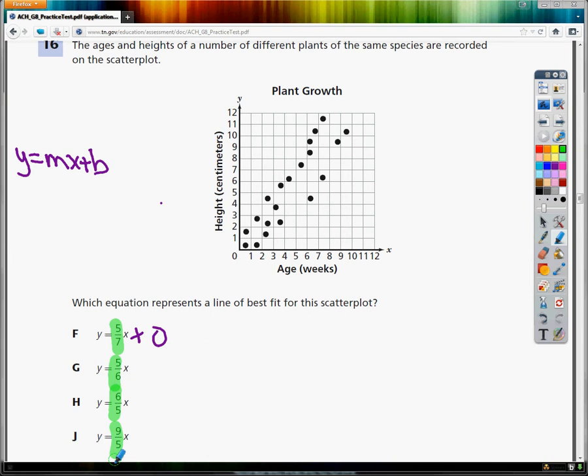What we're going to do is start at 0 and go up 5 and right 7 for the first one and just see if it makes a solid line that's the line of best fit. The line of best fit would be the one that looks like it's going up the middle the best. Let's do one, and it'll make a lot more sense than me just talking about it.